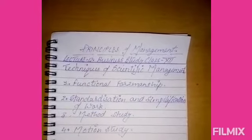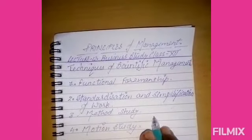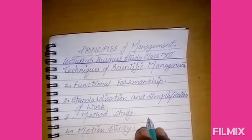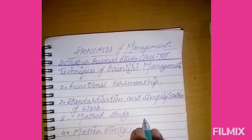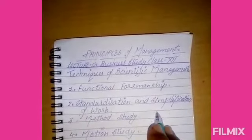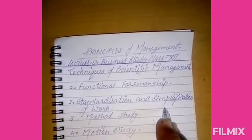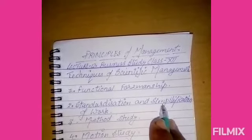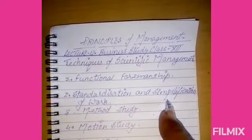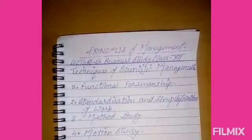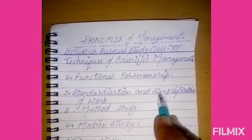Standardization tells us four main points: to reduce a given line of product to fixed types, sizes, and characteristics; to establish interchangeability of manufactured parts; to establish standards of excellence and quality of material; and to establish standards of performance for men and machines. This was standardization and simplification of work.